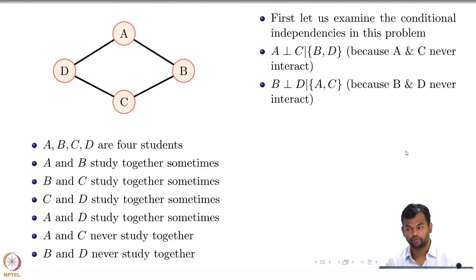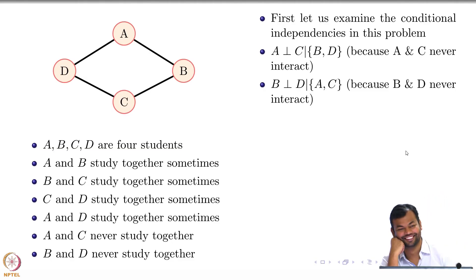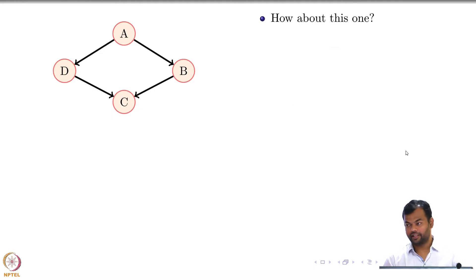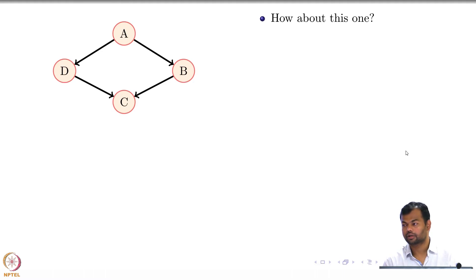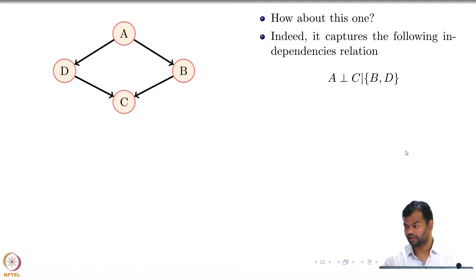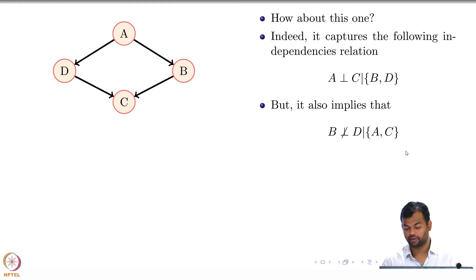How many nodes will that Bayesian network have? Four. Let us try this one network. What are the independences that it encodes? If I draw a Bayesian network, A is independent of C given B and D — half the job is done. What is the other independence I needed? B independent of D given A, C — does that happen? It implies that B is not independent of D given A, C because of causal reasoning, evidential reasoning, or explaining away.